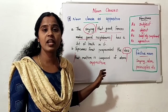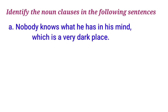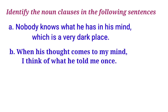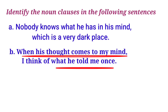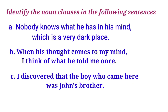Now for the textual exercise. First question: identify the noun clauses in the following sentences. First: 'Nobody knows what he has in his mind, which is a very dark place.' The noun clauses are 'what he has in his mind' and 'which is a very dark place.' Second: 'When his thought comes to my mind, I think of what he told me once.' The noun clauses are 'when his thought comes to my mind' and 'what he told me once.'